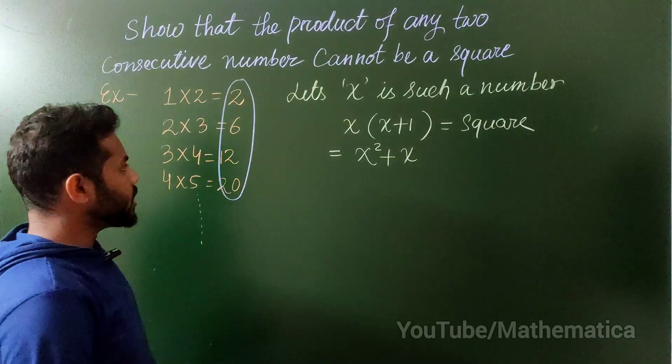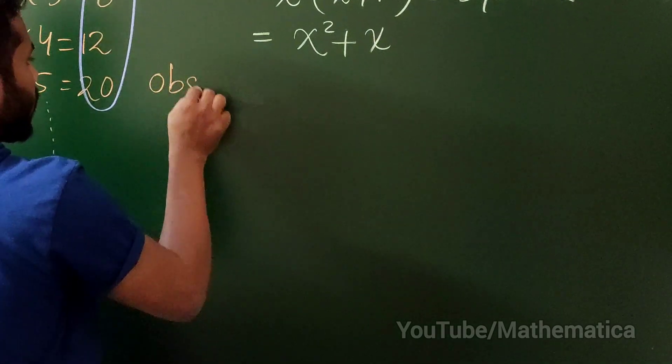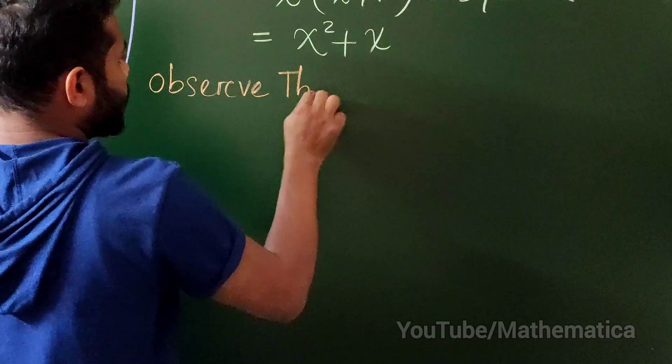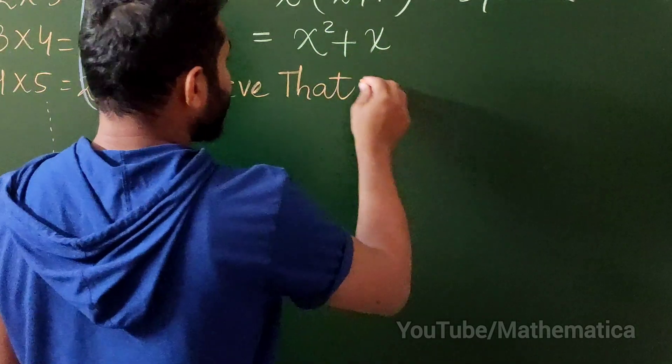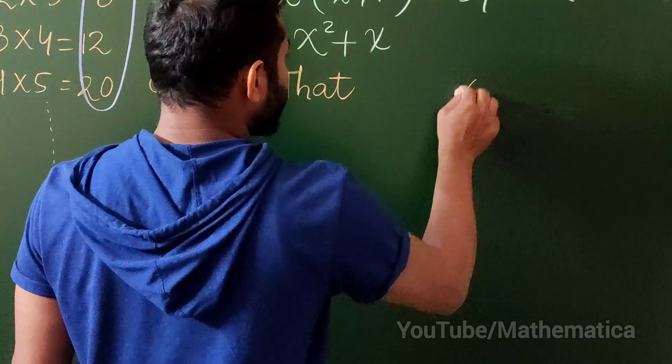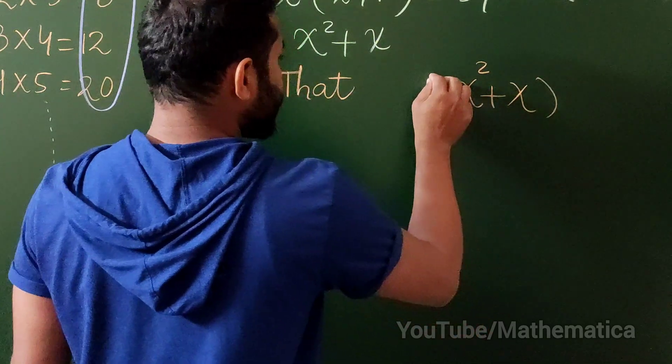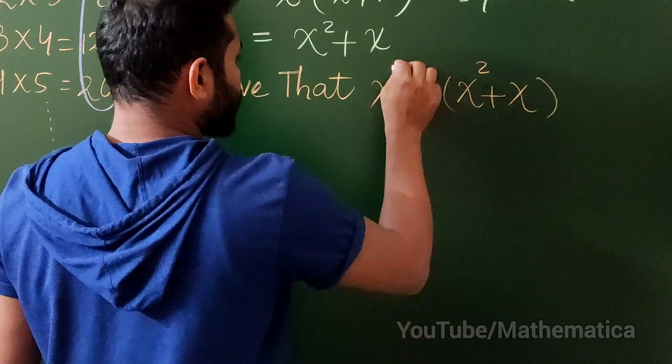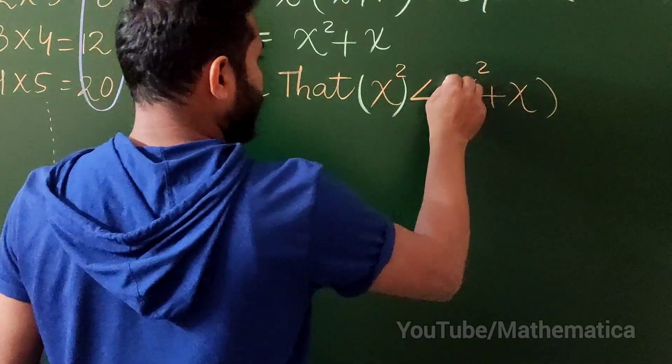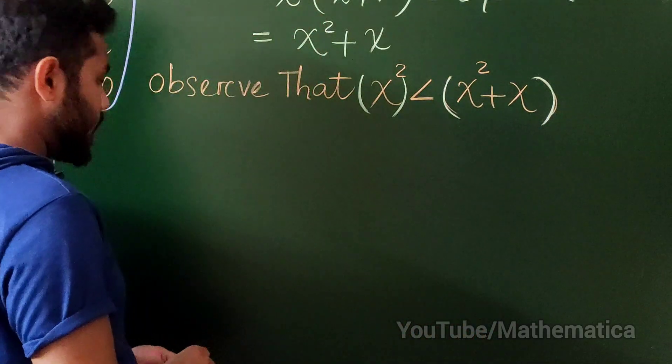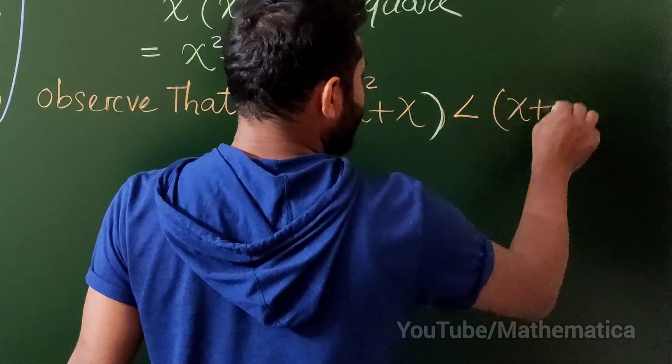It is a very interesting and straightforward result we have. If you observe that this quantity x square plus x, this entire quantity is strictly greater than x square. Right. And this again this quantity is strictly less than x plus 1 square.